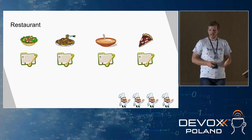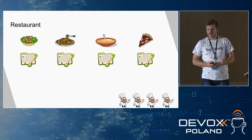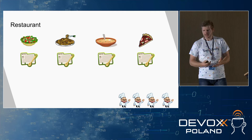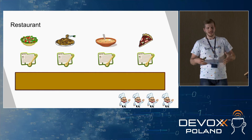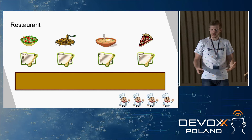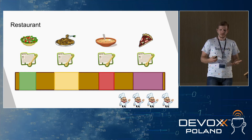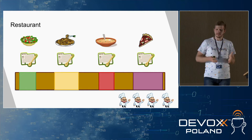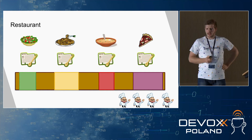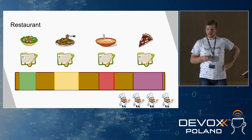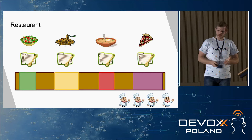In our restaurant we have a team of chefs — those are CPU cores. There is also a big table in the kitchen — that's the workspace, which is memory. Each recipe has a reserved space on this kitchen table, allocated to that particular recipe, and the dish is prepared on it.